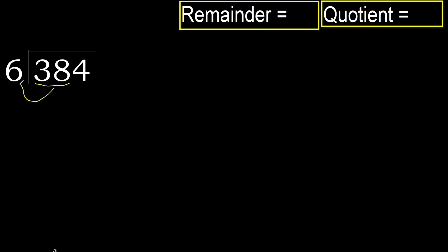38 is not less than 6, therefore work with 38. Multiply 6 by which number is nearest to 38 but not greater. 6 multiplied by 7 is 42, which is greater. 6 multiplied by 6 is 36, which is not greater. Subtract: 38 minus 36 equals 2.